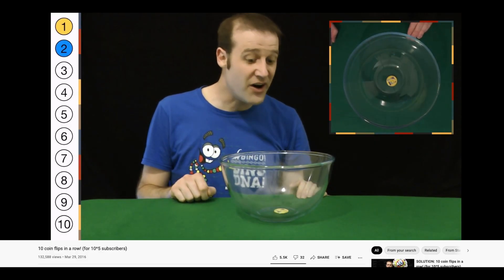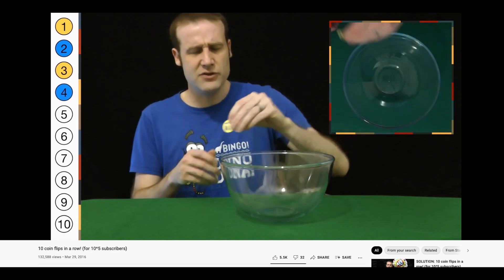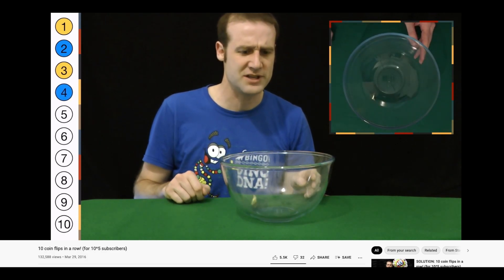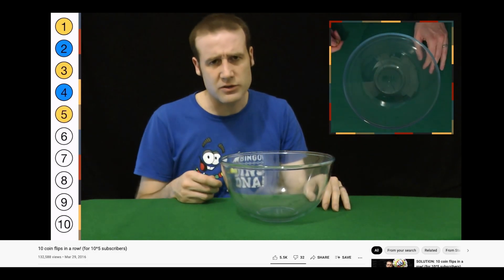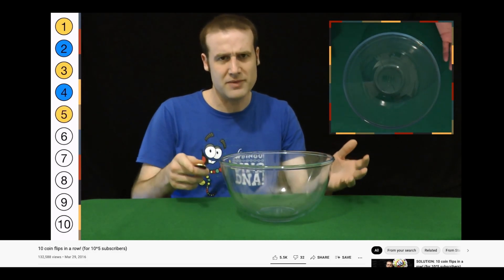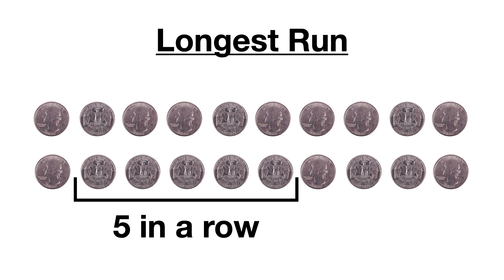He found that the students that faked the assignment usually did a decent job at having approximately the same number of heads as tails, but there was another characteristic of the coin flips that they were much worse at replicating. Matt looked at each sequence and would find the longest streak of the same side of the coin appearing in a row. For example, in this string of 20 coin flips, the longest streak would be these five tails that appear in a row.